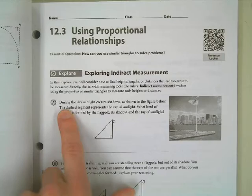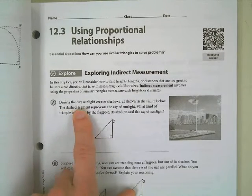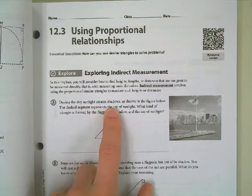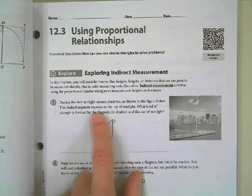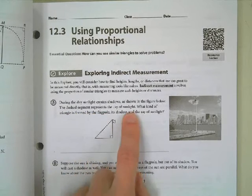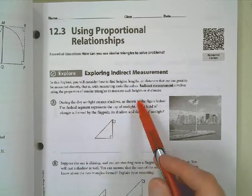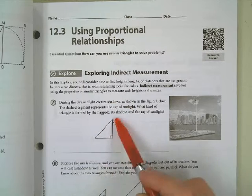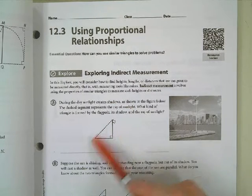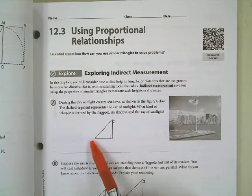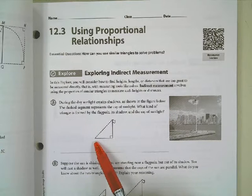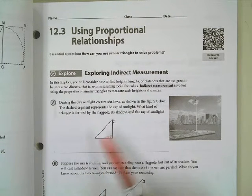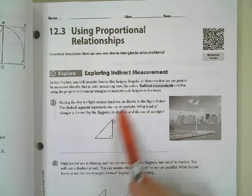During the day, sunlight creates shadows, as shown in the figure. The dashed segment represents the ray of sunlight. When the sun is coming down from here, it's going to create rays of sunlight that then cast this shadow of the flagpole right here. So the shadow would be this side right here, because the sunlight's coming down this direction and then the shadow's right there.